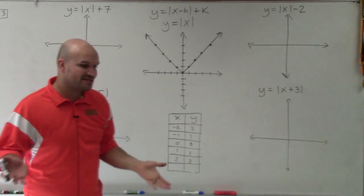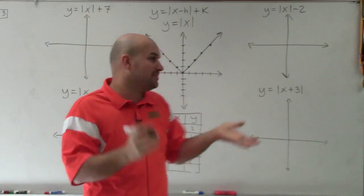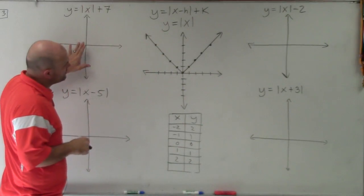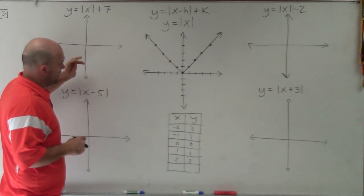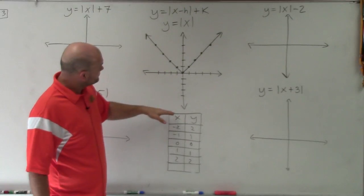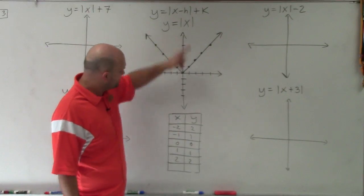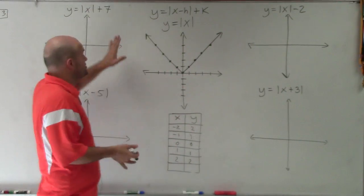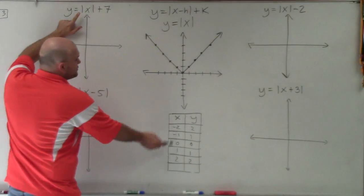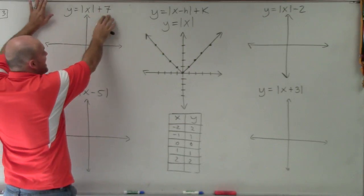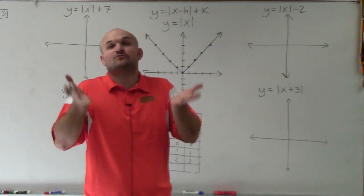When k is positive, that's actually going to raise the graph up. So basically, when you look at a problem like this — if you take your x value and plug in negative 2, then add 7 to it, you can see that the y is going to be much larger. When you add 7 outside of the absolute value brackets and it's positive, you're going to raise the graph up.